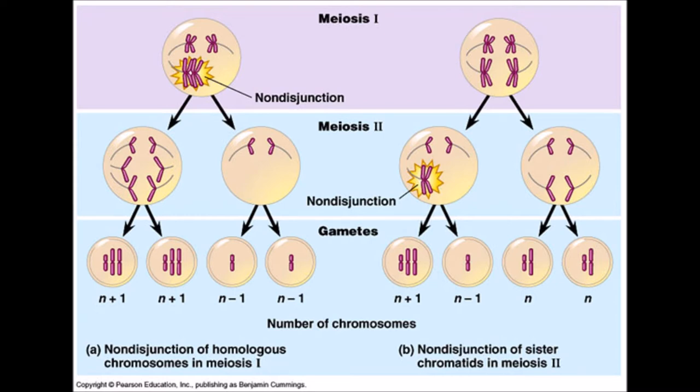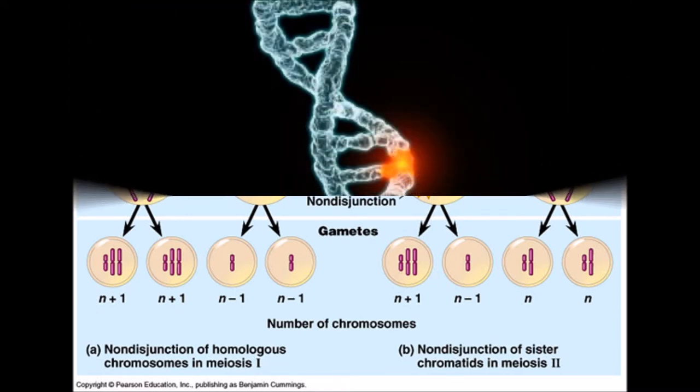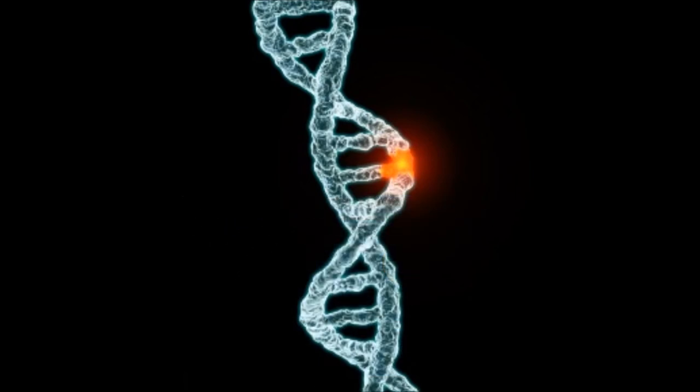Mutations can happen in varying stages of meiosis, but it is possible to predict the likelihood of children inheriting a disorder from their parents. Fortunately, diseases caused by just one dominant copy of a defective gene, such as Huntington's, are very rare.